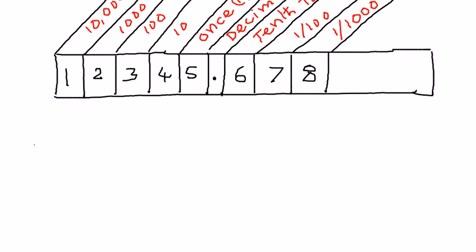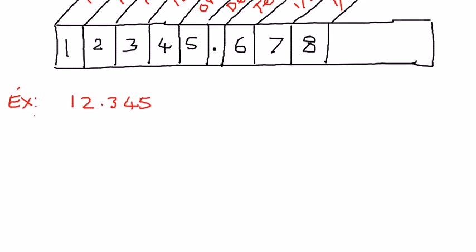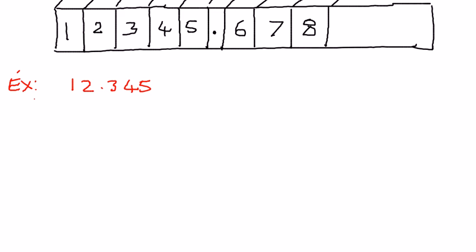Let's take another example and see if we can explain it with respect to this place value chart. We want to name the value of the digit 4 in the number 12.345. So we have the decimal number 12.345, and we are trying to figure out: name the place value of the digit 4 in 12.345.